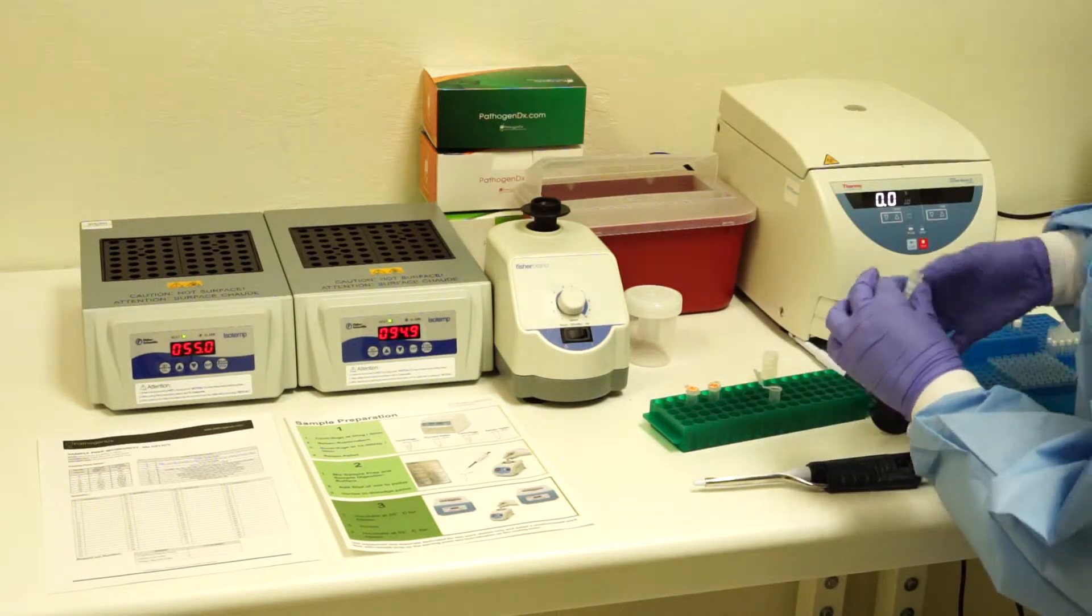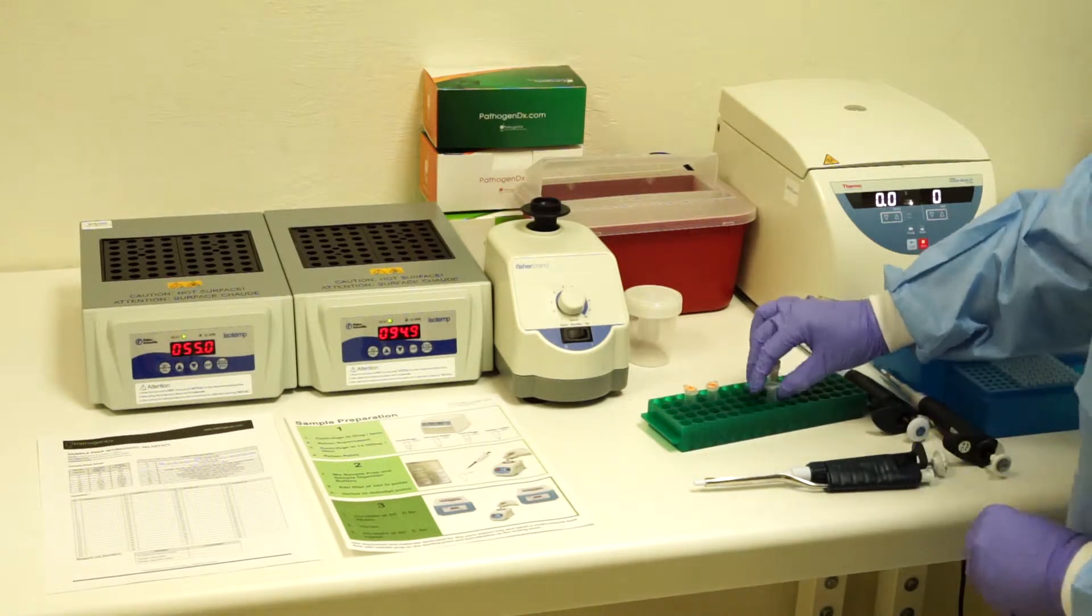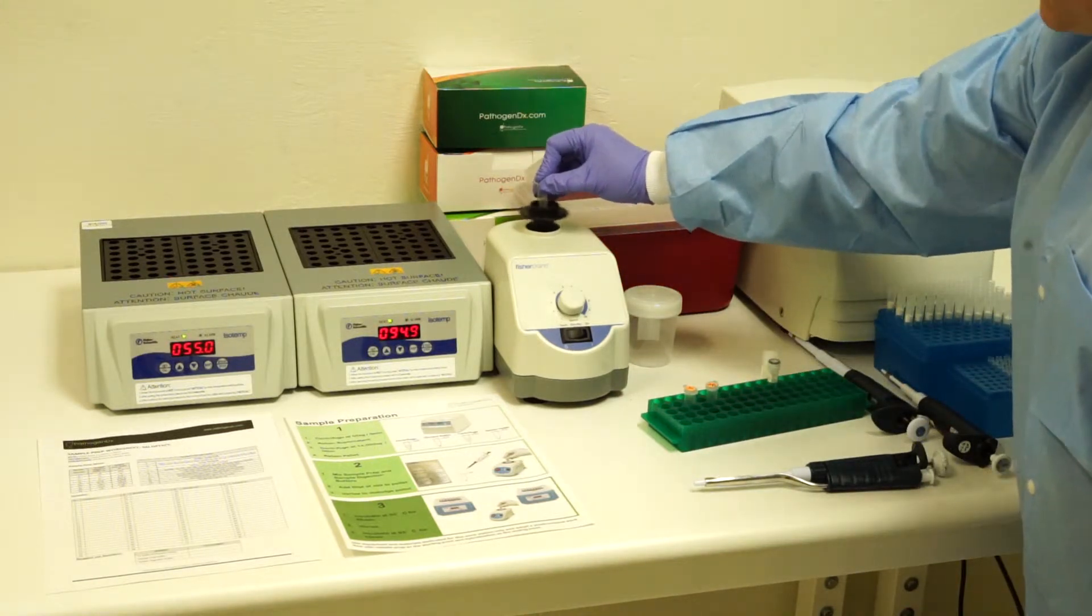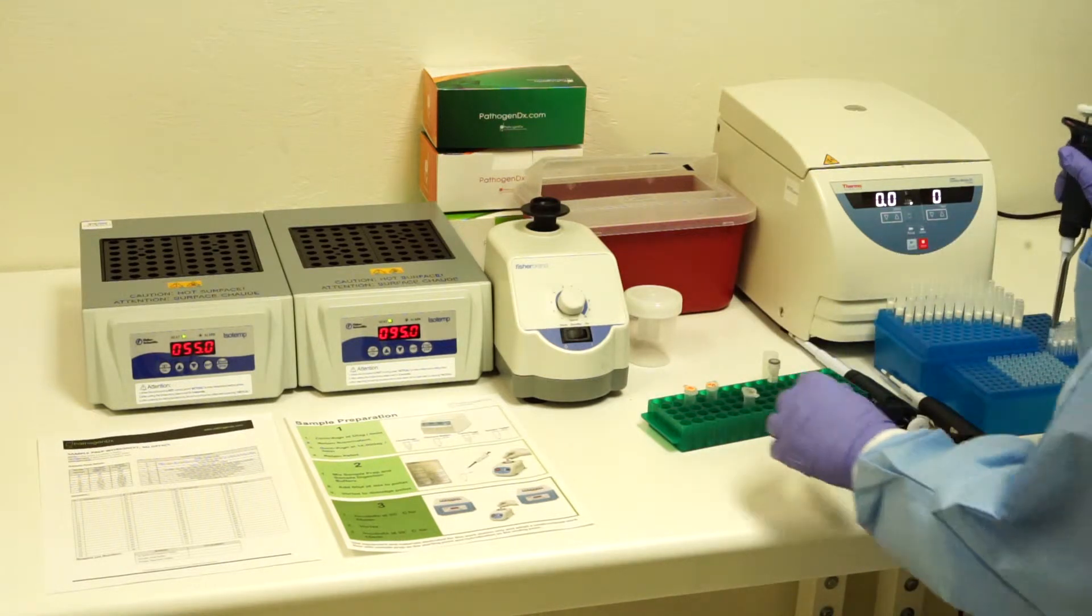Make sure to pipette up and down with the sample digestion buffer. Once the two are combined, vortex to mix. 50 microliters is applied to each sample.